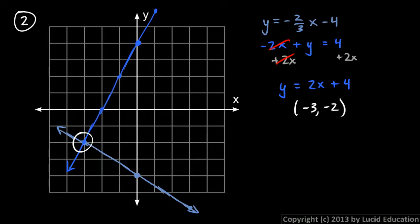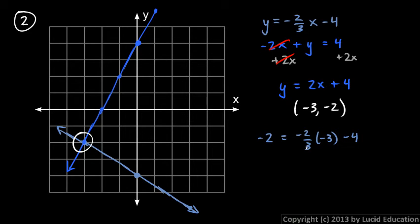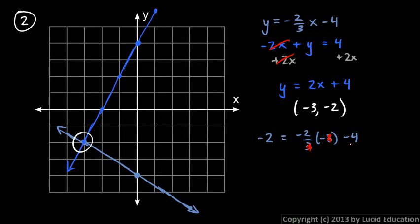Let's check that in each of the equations. In the first one, put in negative three for x and negative two for y, and see if we get a true equation. So negative two is negative two-thirds times negative three minus four. This three cancels this three, but it doesn't cancel that negative sign. We have a negative two and a negative sign, which makes that a positive two minus four, which is negative two. So that works out mathematically.